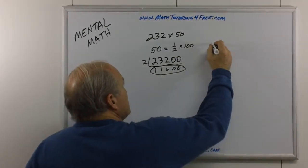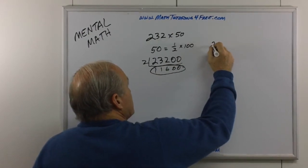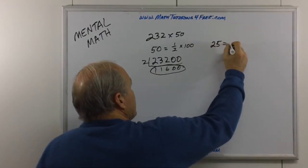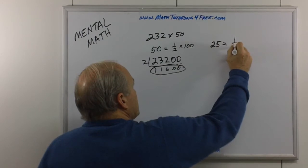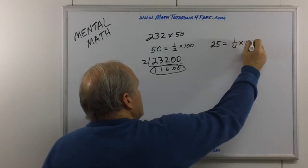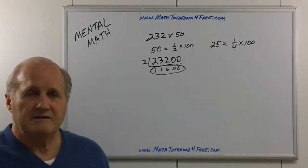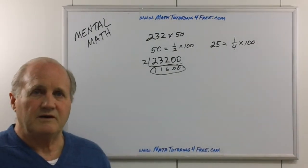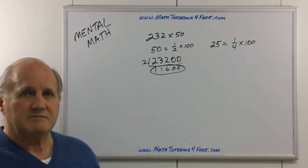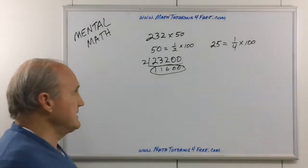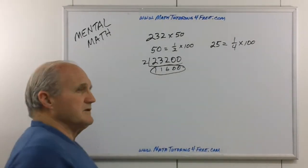Another example is, let's say, multiplying by 25. Well, 25, hopefully you know, is one-fourth of 100. So you do the same kind of thing, and dividing by 4, you can do in your head, as opposed to entering all in the calculator. What are some other combinations?